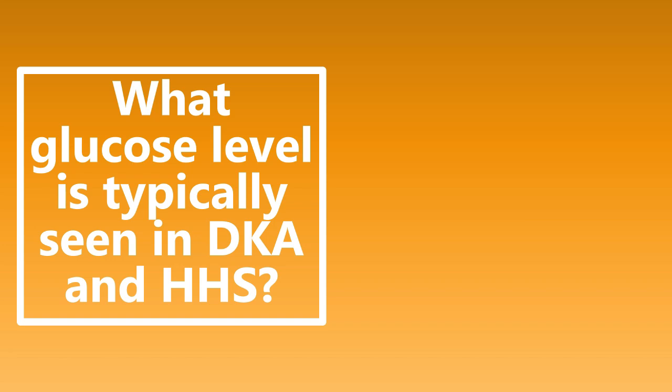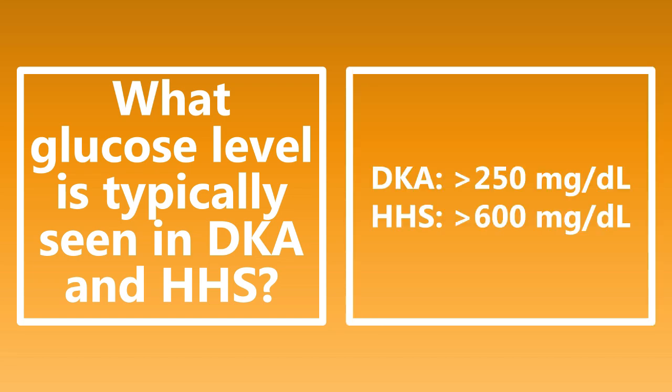What glucose level is typically seen in DKA versus HHS? In DKA, we typically see a blood glucose level of greater than 250. In HHS, it's typically higher — greater than 600. This is not absolute; patients in DKA can have glucose levels in the 400s or 500s. But on exams, just know the glucose level for DKA is usually several hundred less than it is for HHS.